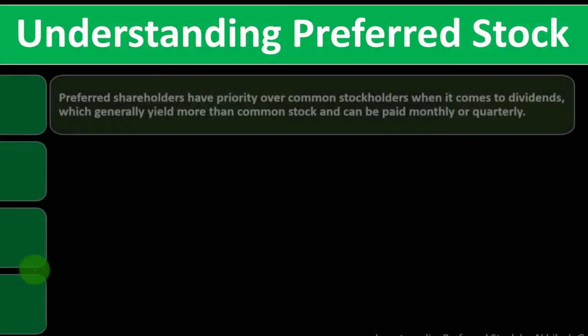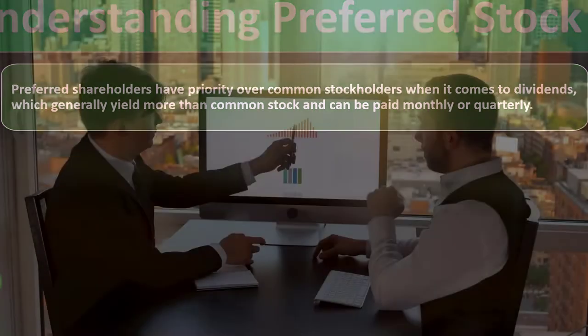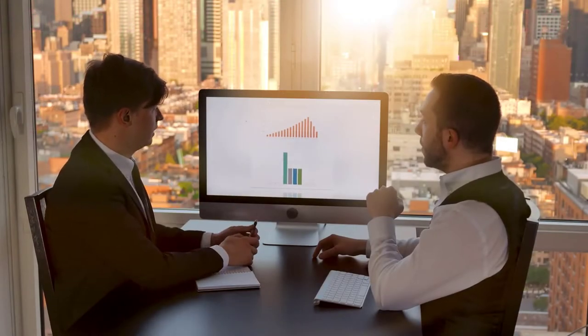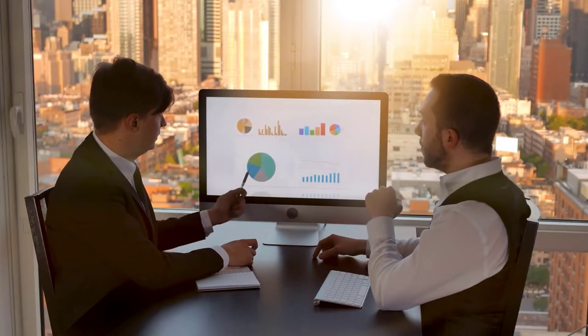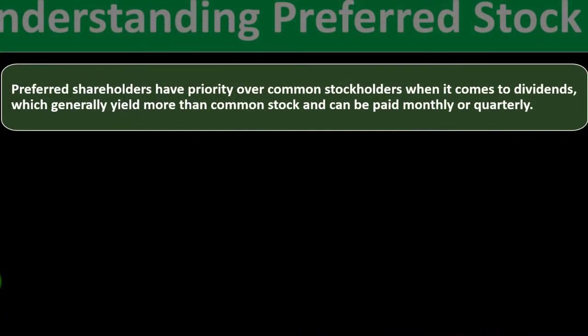Preferred shareholders have priority over common shareholders when it comes to dividends, which generally yield more than common stock and can be paid monthly or quarterly. Dividends represent the distribution of a company's earnings. Think of it like a sole proprietorship or partnership — when the company generates money, the owner takes a draw for personal use.